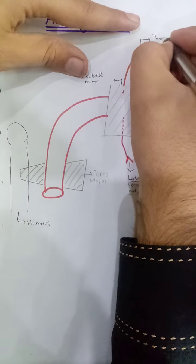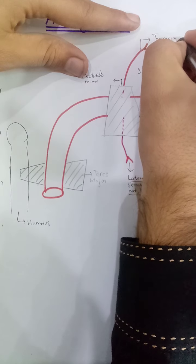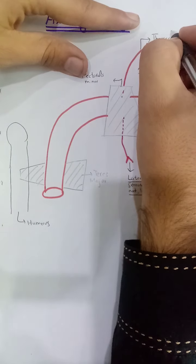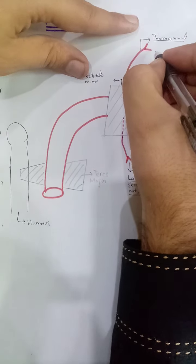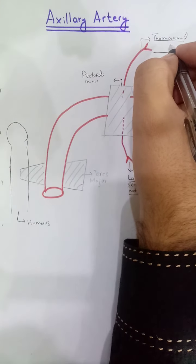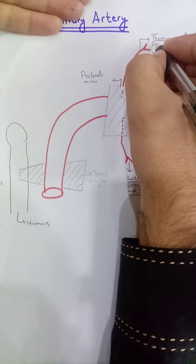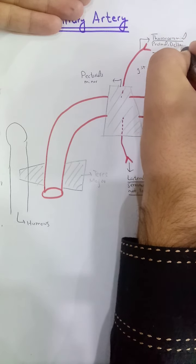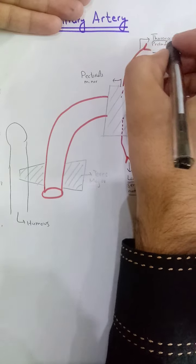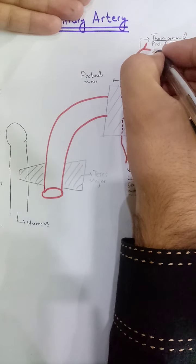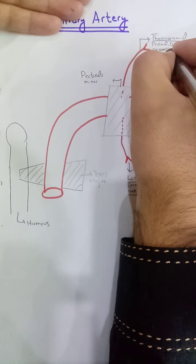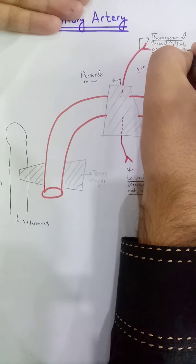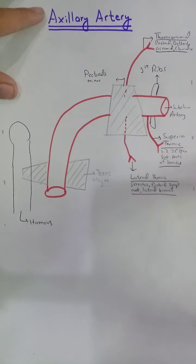The second branch of the second part is the thoracoacromial artery. This thoracoacromial artery divides into four branches named: pectoral, deltoid, acromial, and clavicular — each supplying their respective regions.